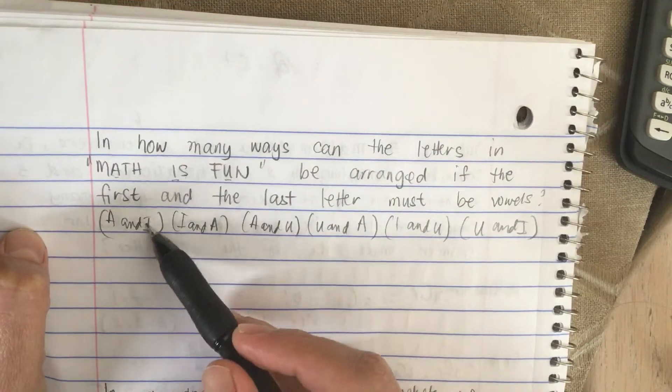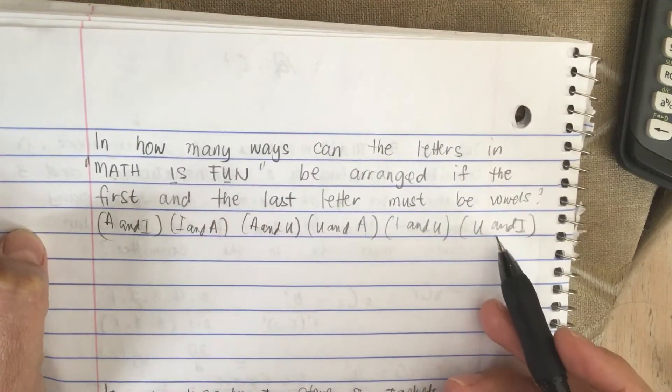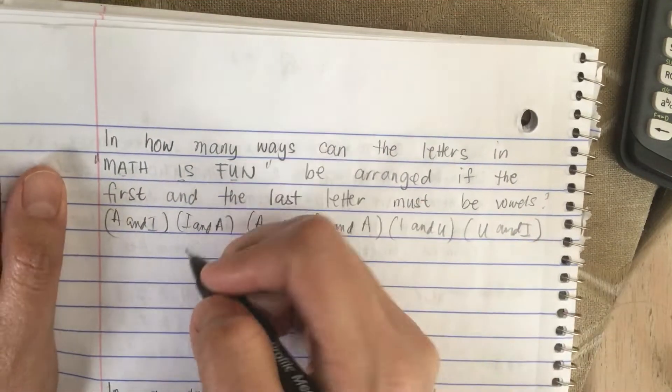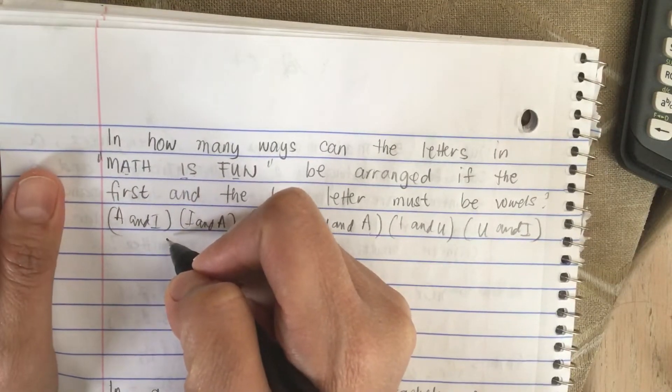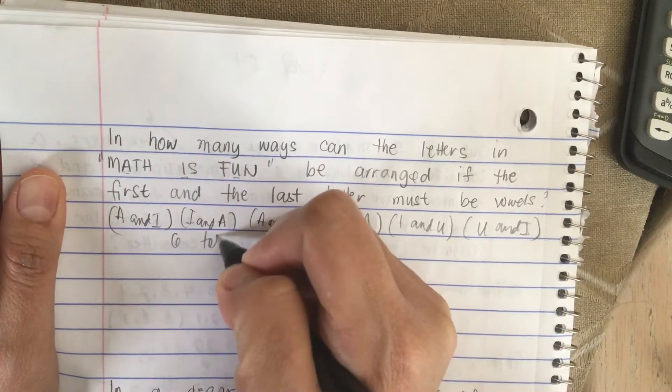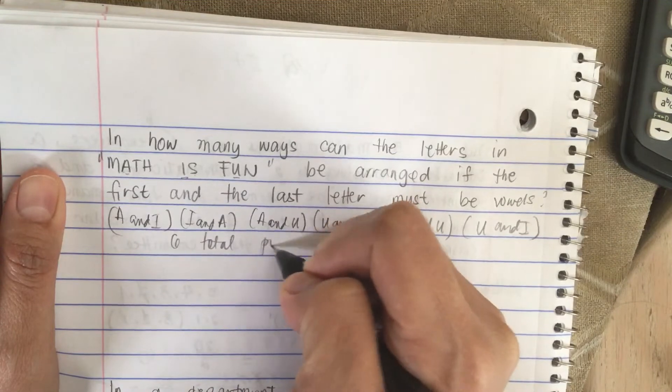So we have one, two, three, four, five, six. So total is six possibilities arrangement. So this is six total possibilities.